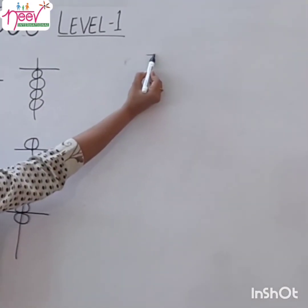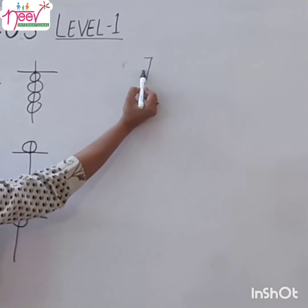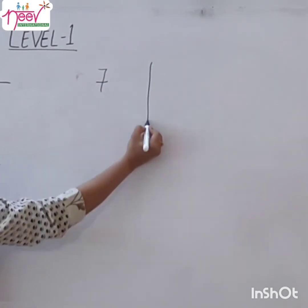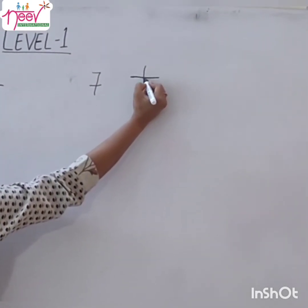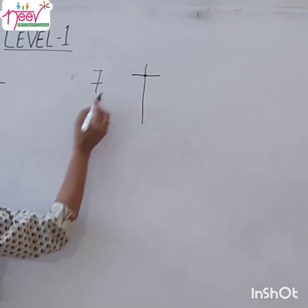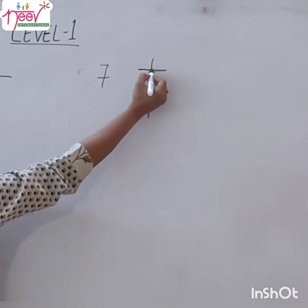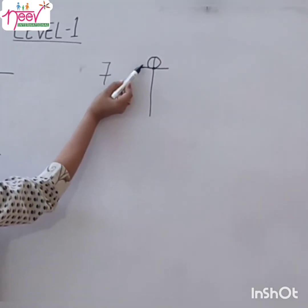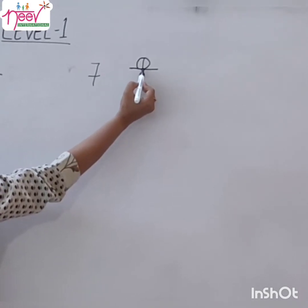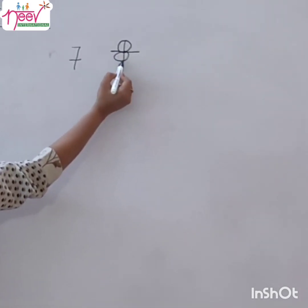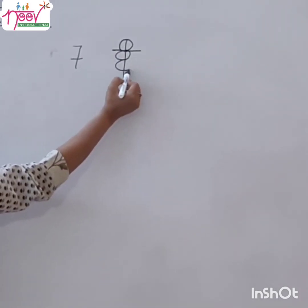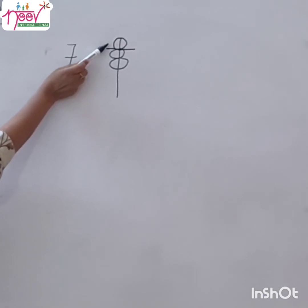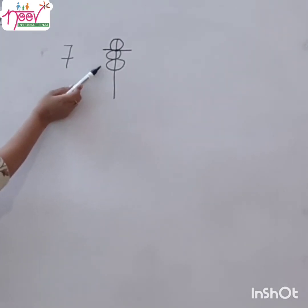Now let's see how to place value 7. We will make 1's rod. To place value 7, we will place the upper bead — value 5 — and 2 lower beads. Then the value is 7. 5 plus 2 equals 7.